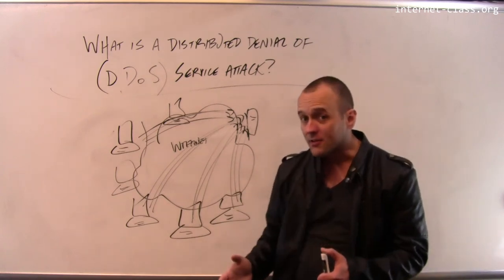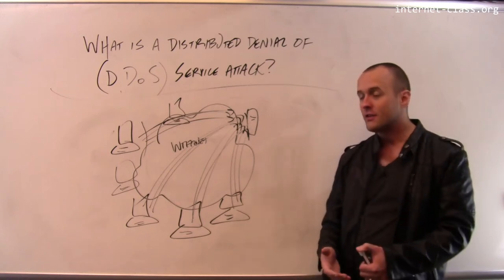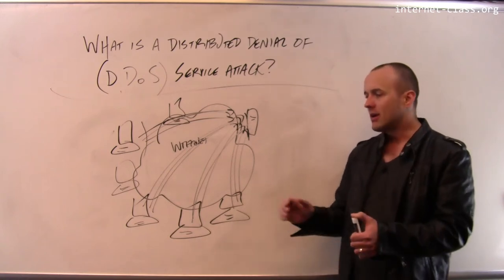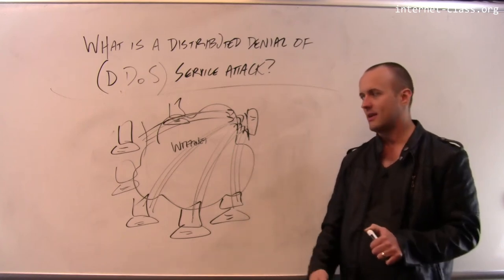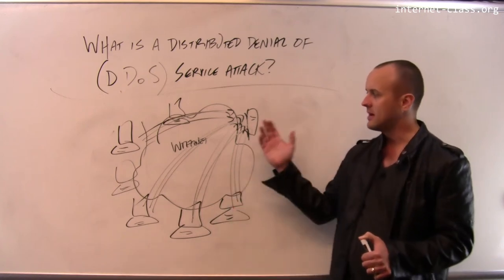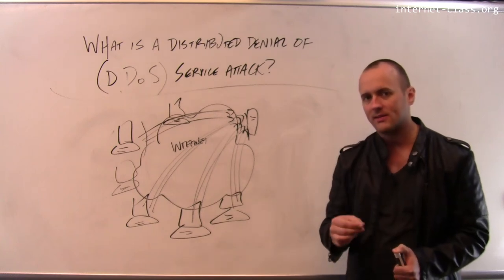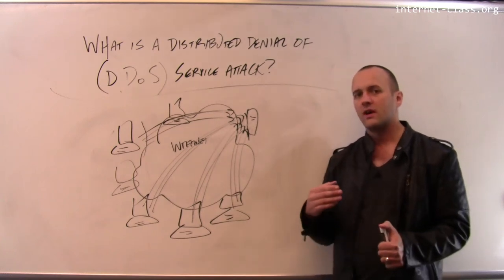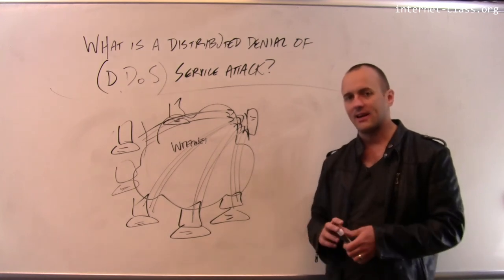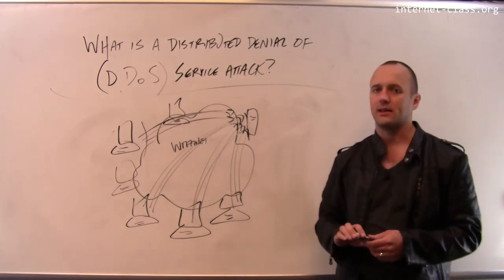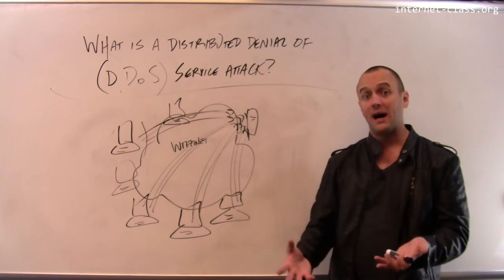The obvious question is: how does an attacker get access to all these machines? A rich attacker might rent machines on something like Amazon and launch this type of attack. But what's more common is that attackers use a previous hack to gain access to lots of machines. This is done through things called botnets.